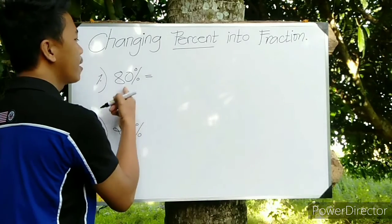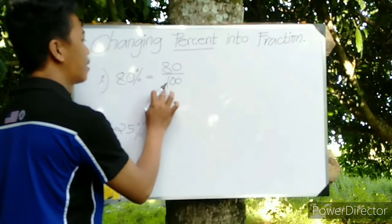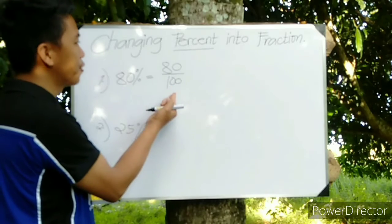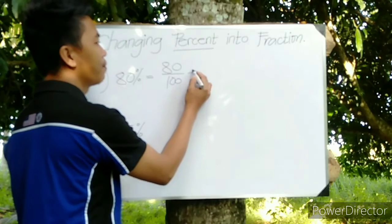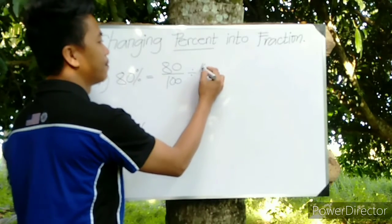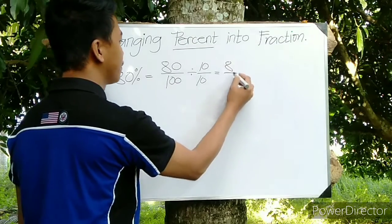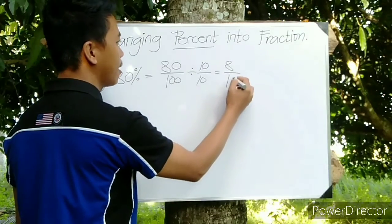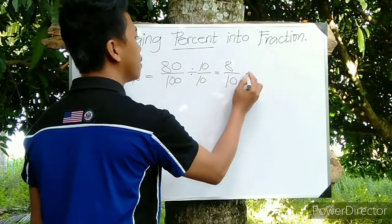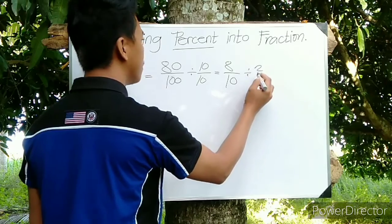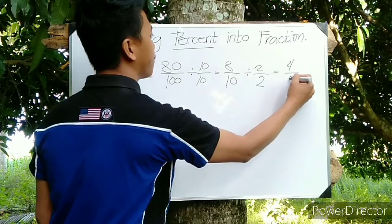It's very simple. When you say 80%, that is 80 over 100. Just reduce this fraction form into lowest term. We can divide this one by 10, so the answer is 8 over 10. You can still divide that one by 2 over 2, so we have 4 over 5.